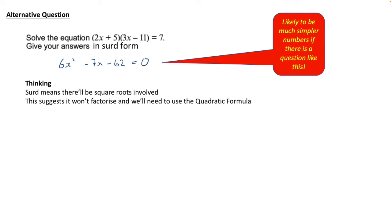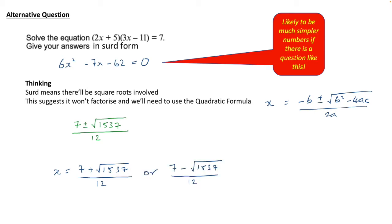Not necessarily, but most likely. So there's the quadratic formula again and of course we've already done the working to get to here so we get to this point and then we present our answers as x equals 7 plus root 1537 over 12 or 7 minus the square root of 1537 over 12.